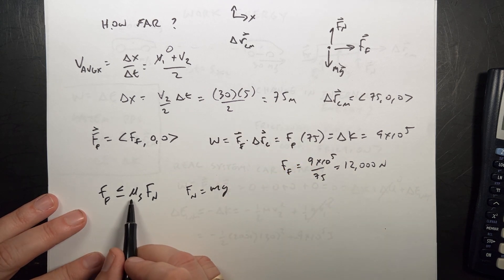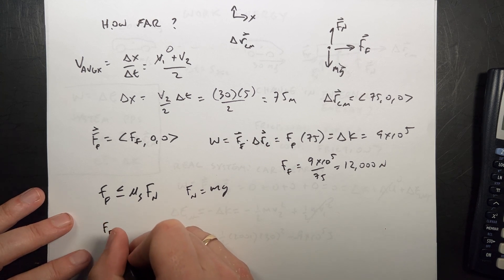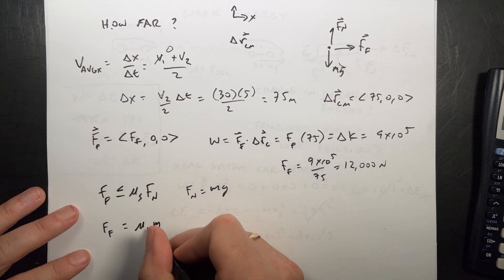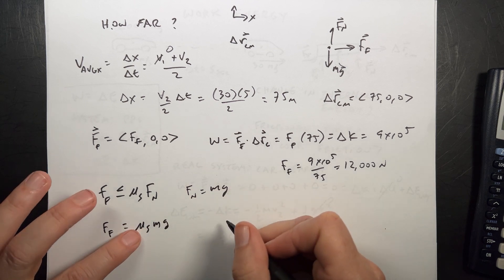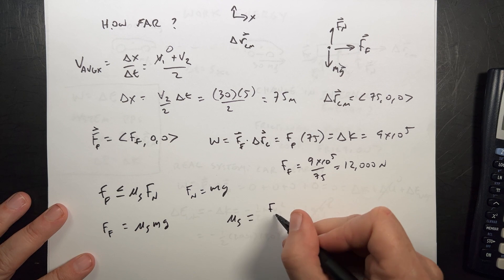Now if I want to find the minimum coefficient, I'm going to get this minimum frictional force. So I get ff, which I'm going to use, is equal to mu s times mg. And I want to solve for that. So the coefficient, minimum coefficient of friction is the frictional force, which I just found, divided by mg.